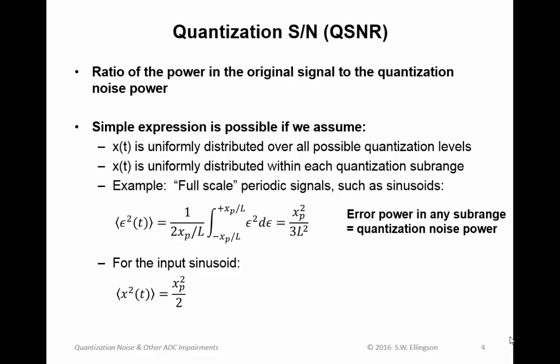A relevant description of the effect of quantization error, or quantization noise, is quantization signal-to-noise ratio, or QSNR. This is the ratio of the power in the original signal to the quantization noise power. So now we would like to develop a simple expression for this. A simple expression is possible if we assume a few things. First, we assume that the input is uniformly distributed over all possible quantization levels.